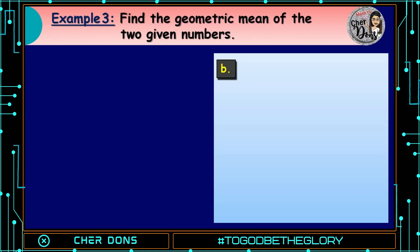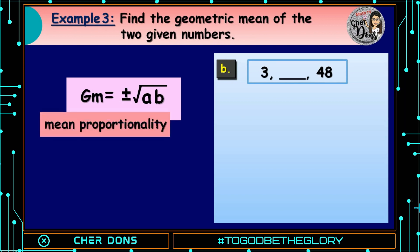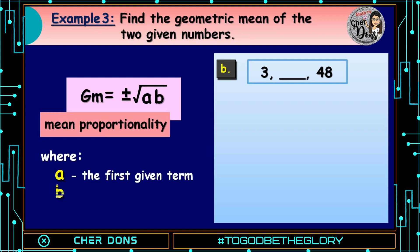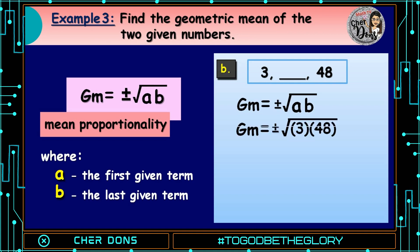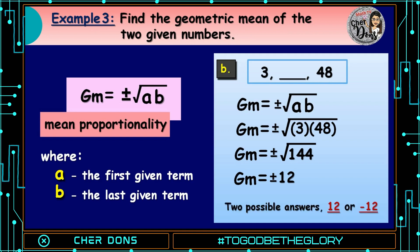Another example, letter b: 3, blank, and 48. We use the same formula — positive or negative square root of a times b, where a is the first given term and b is the last given term. So positive or negative square root of 3 multiplied by 48 equals the square root of 144. Positive or negative square root of 144 equals positive or negative 12. We have two possible answers: positive 12 or negative 12.